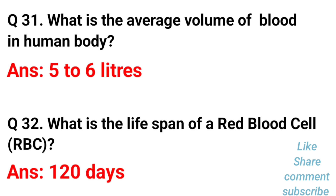What is the average volume of blood in the human body? The average volume of blood in the human body is 5 to 6 liters.